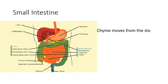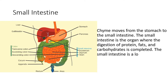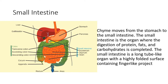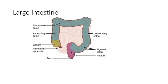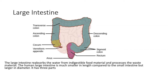The partially digested food and gastric juice mixture is called chyme. Chyme moves from the stomach to the small intestine. The small intestine is the organ where the digestion of protein, fats, and carbohydrates is completed. The small intestine is a long tube-like organ with a highly folded surface containing finger-like projections called villi. The large intestine reabsorbs water from indigestible food material and processes waste material. The human large intestine is much smaller in length compared to the small intestine, but larger in diameter.